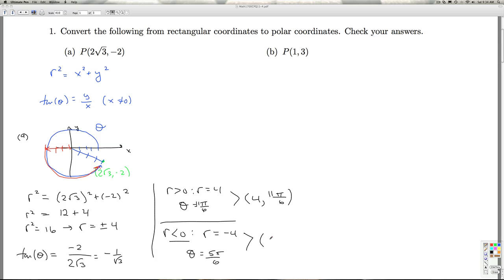One representation with a negative r value is negative 4, 5 pi over 6. So how can I check these?